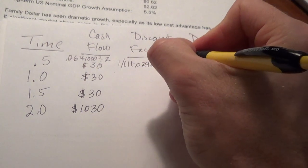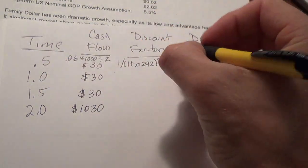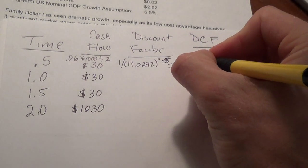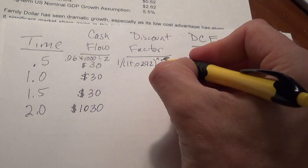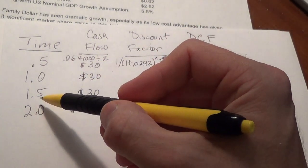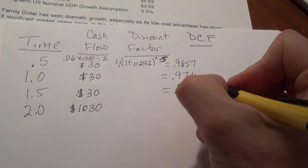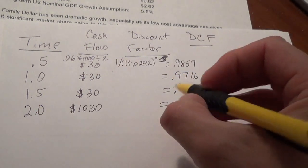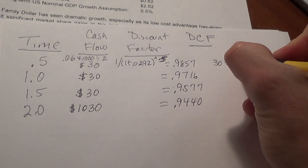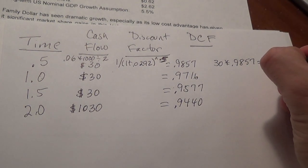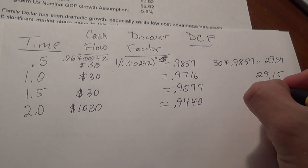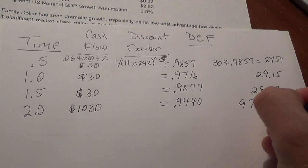The discount factor for the first cash flow is 1 divided by (1 + .0292) raised to the .5, giving .9857. Raised to the first power gives .9716. Raised to 1.5 gives .9577. Raised to the second power gives .9440. The discounted cash flows are $30 times each factor: 29.57, 29.15, 28.73, and 972.36.